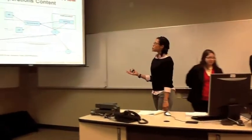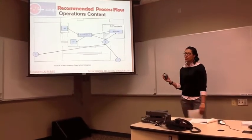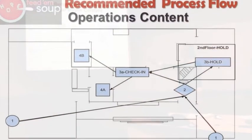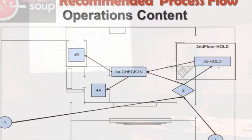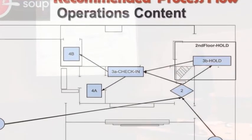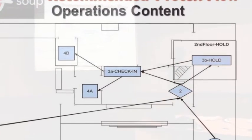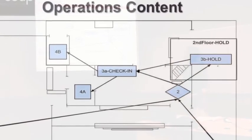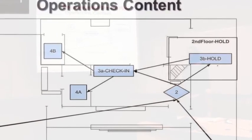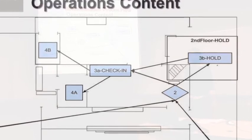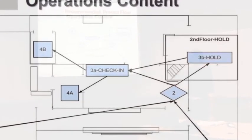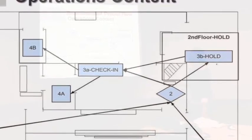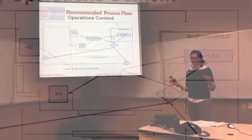Our operations part of the project includes a process flow of the inventory flow throughout the store. Step one, the donation will come into the store. Step two, a decision on whether a hold or a check-in process will be made. Currently they do not have a holding process, but we decided to include this because we feel it will potentially increase customer service as lines increase throughout the store. In the check-in part, the items will be recorded into the system, and at point four, the items will be stored in their appropriate locations.